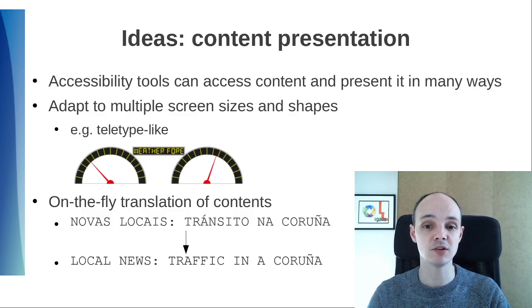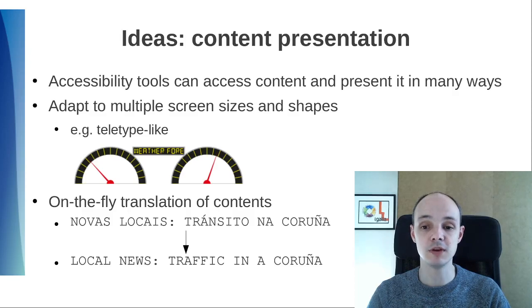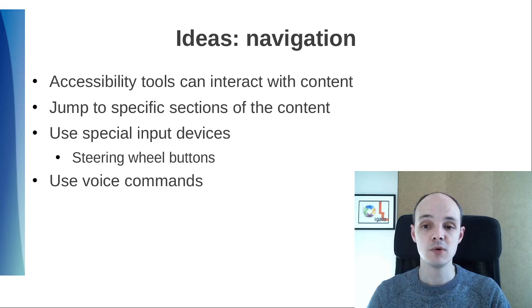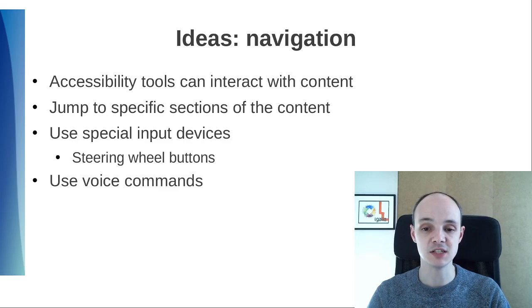We could even go further, manipulating the content, like providing on-the-fly translation of contents — useful if you are on a trip abroad and want to check the local media for traffic news. We could also apply accessibility tools to innovate on content navigation. We could extract an index for the contents, and since accessibility tools can also be used for interaction, we could implement a way to shortcut directly to specific sections of the content, combined maybe with text-to-speech. We could use accessibility APIs as an interface to special input devices, for example, buttons on the steering wheel or even voice commands.